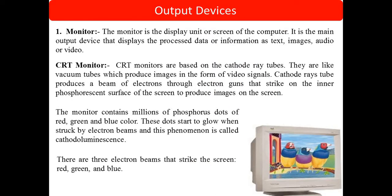The monitor is the most used output device. CRT monitors are based on cathode ray tubes — these are like vacuum tubes which produce images in the form of video signals. Cathode ray tubes produce a beam from an electron gun that strikes the inner phosphorus surface on the screen to produce an image. In CRT monitors, an electron gun at the back of the monitor fires electrons onto the phosphorus-coated screen to create the image. These were used 20 to 30 years ago.